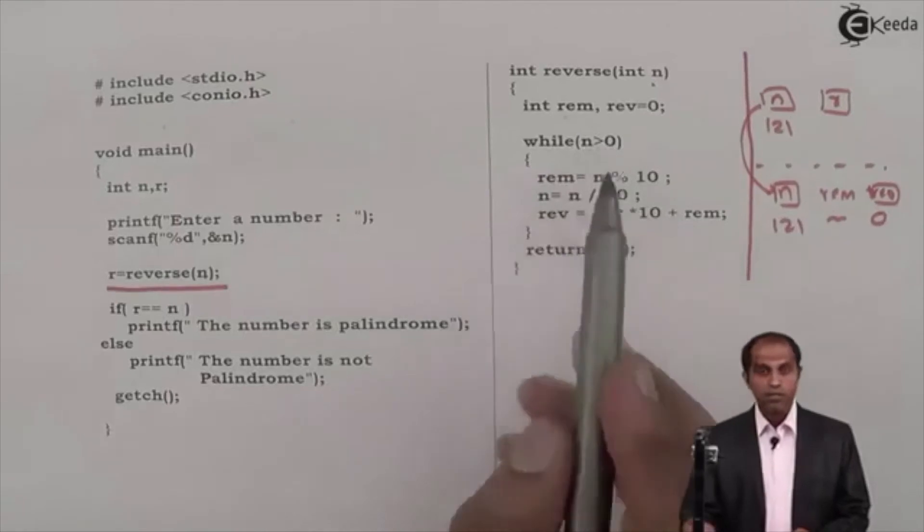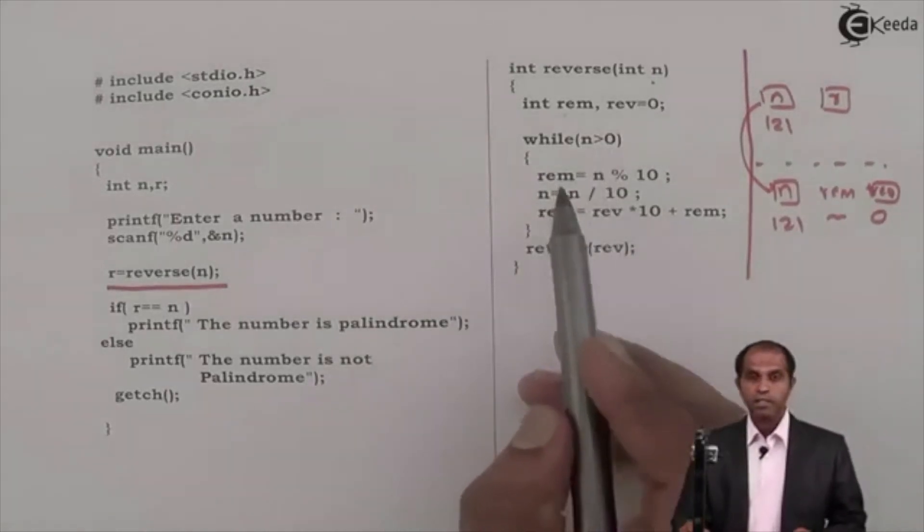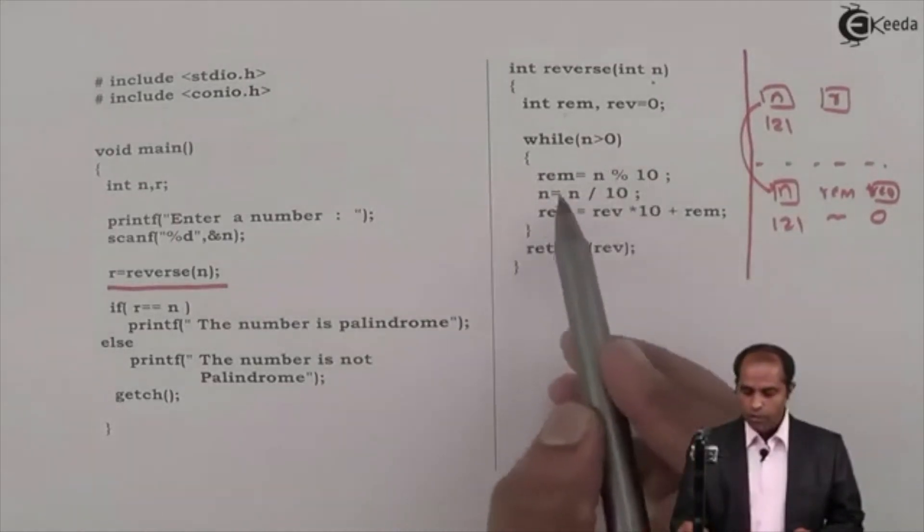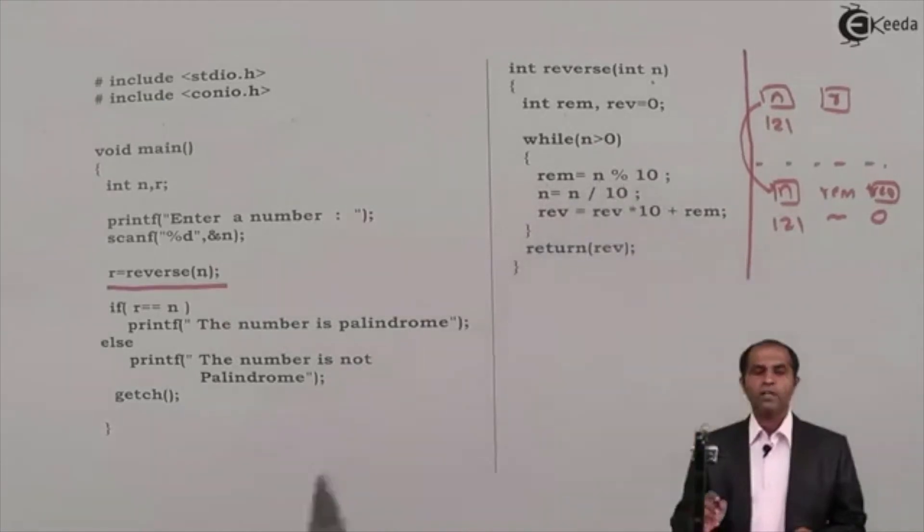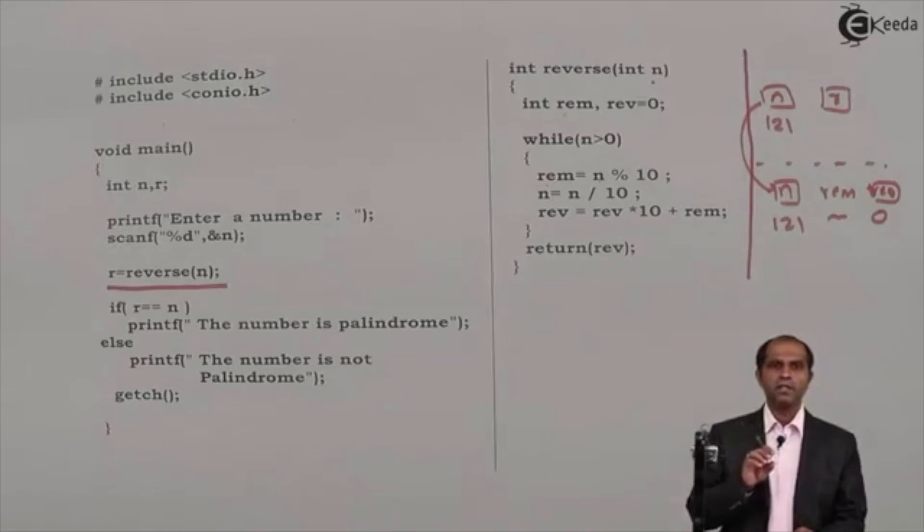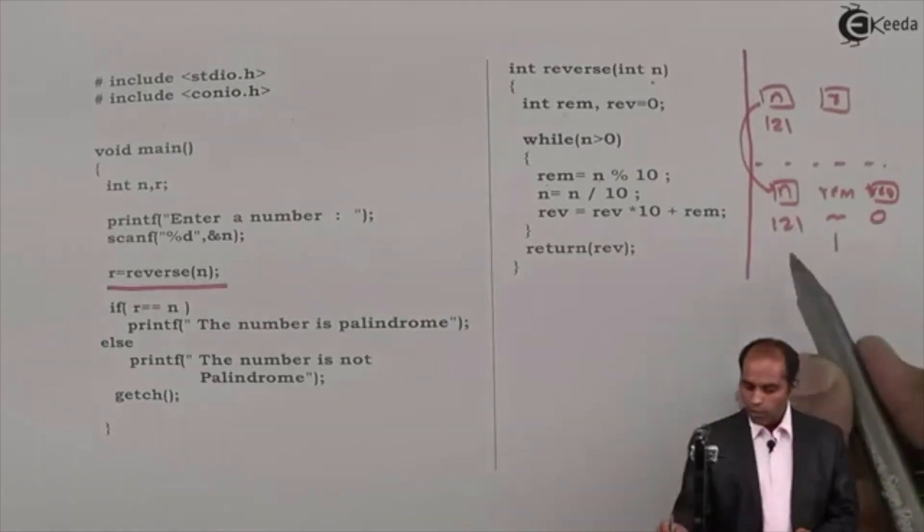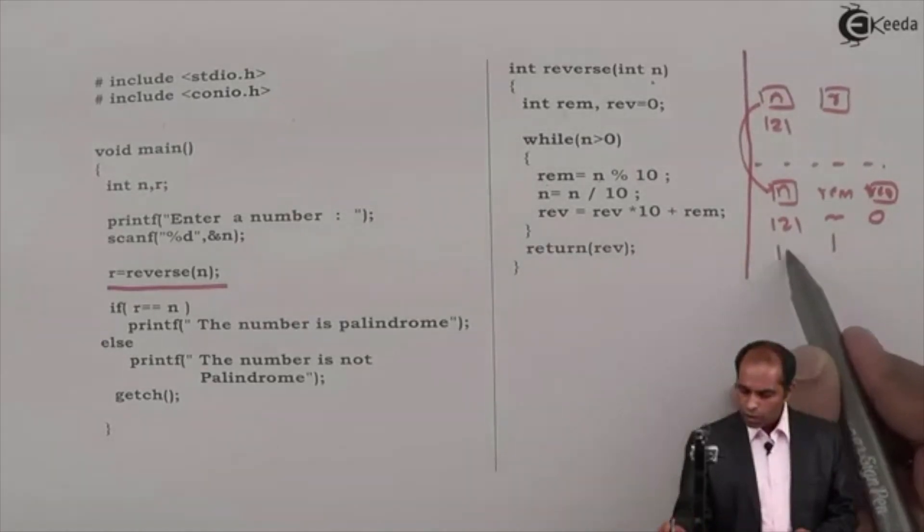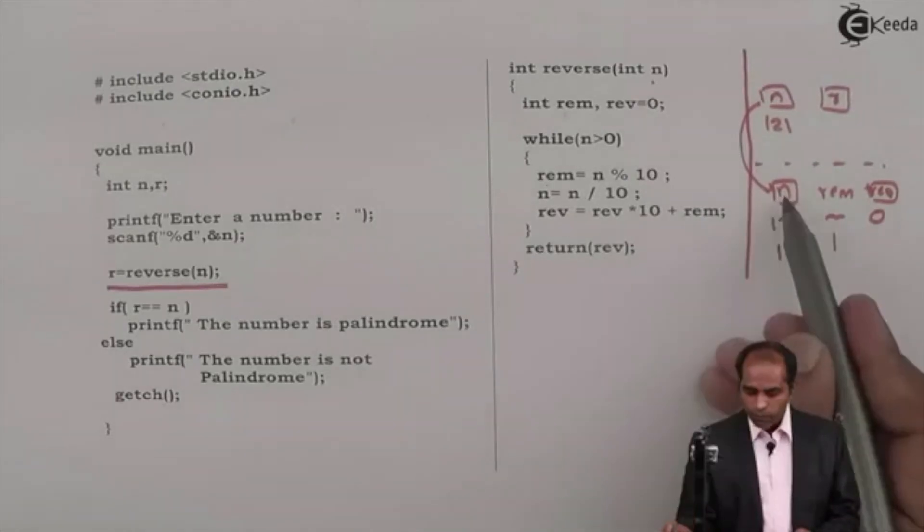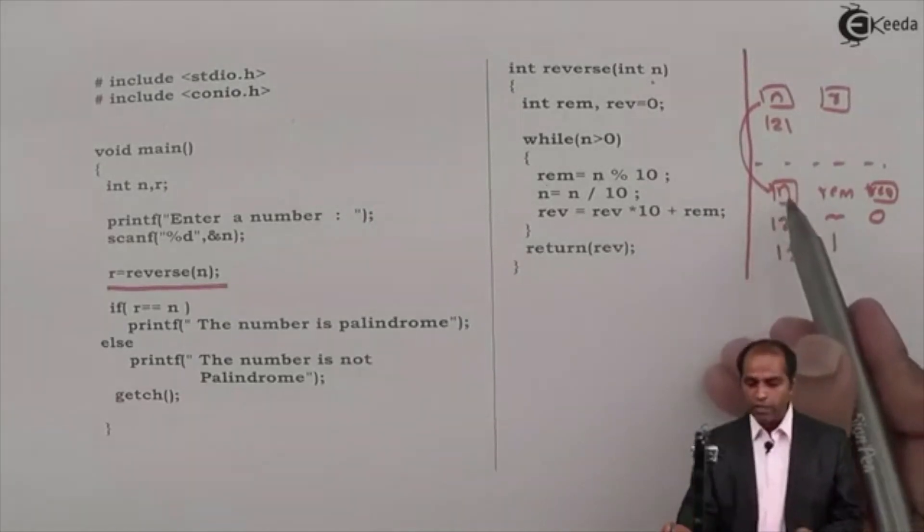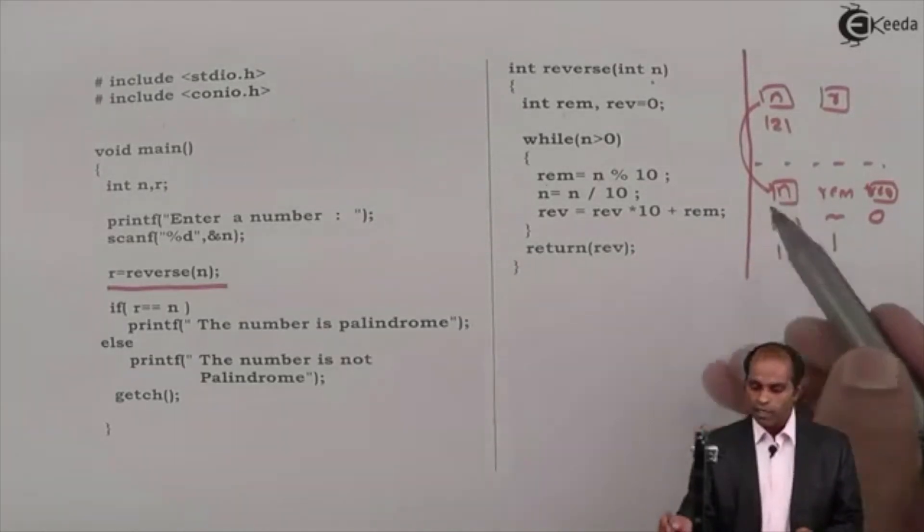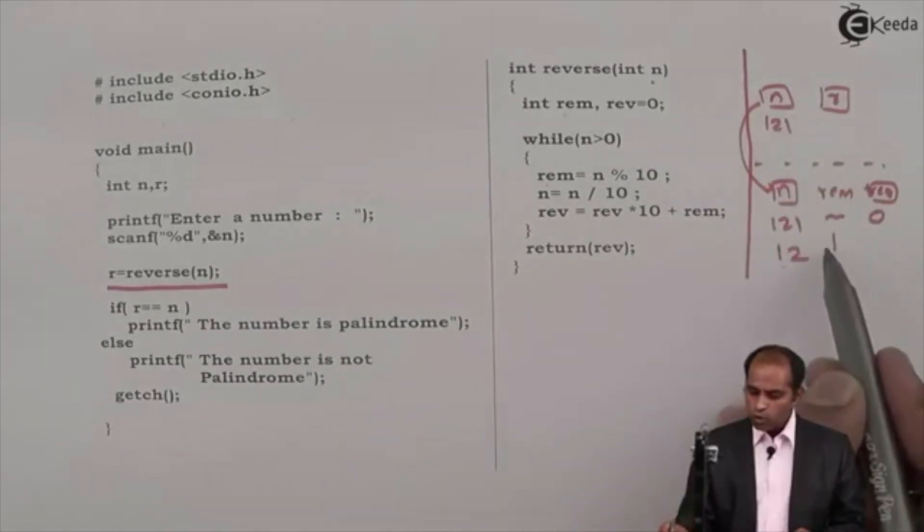Now observe this. While 121 greater than 0. Yes, 121 is greater than 0. True. True in the sense do this operation. Remainder is n mod 10. We have already seen that whenever we want to take out separate digits then the number has to be divided and modded by 10 continuously. So 121 mod 10 is 1. 121 by 10 is 12. Now the variable n which exists in function gets modified but will not affect the variable n of the main.